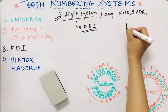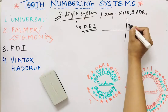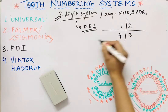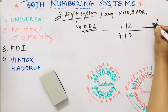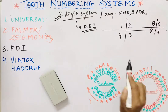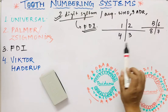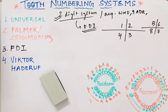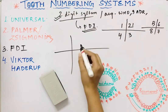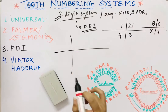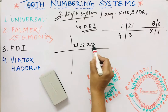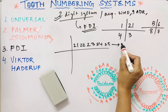In the FDI system, the quadrants are first numbered. For permanent dentition, quadrants are numbered 1, 2, 3, 4. For primary dentition, quadrants are numbered 5, 6, 7, 8. Then the teeth within each quadrant are numbered 1 to 8 from the central incisor. So for example, the 2nd quadrant's central incisor is '2, 1'; its first premolar (4th tooth) is '2, 4'; and going out to the third molar is '2, 8.'